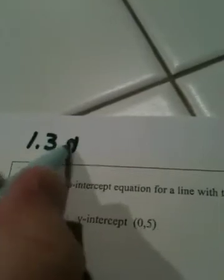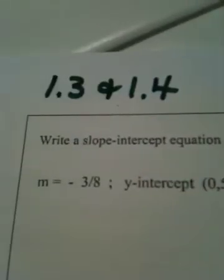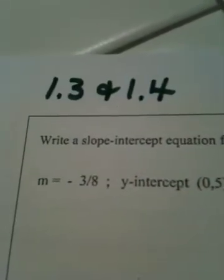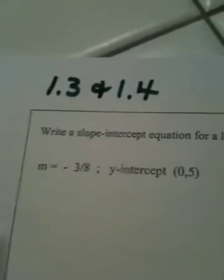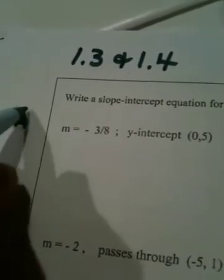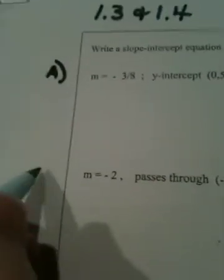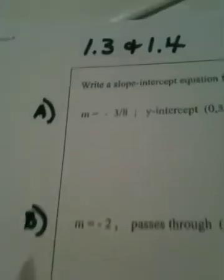All right, continuing in sections 1.3 and 1.4. The question is: find a slope-intercept equation for a line with the given characteristics. We have a first question we'll call part A, and a second problem we'll call part B to keep them organized.